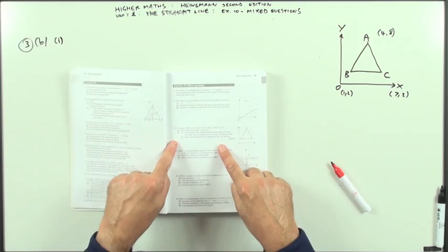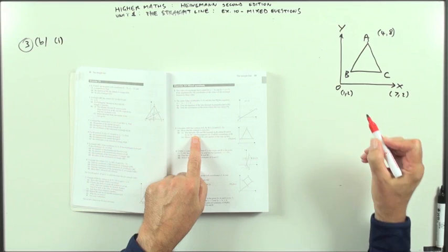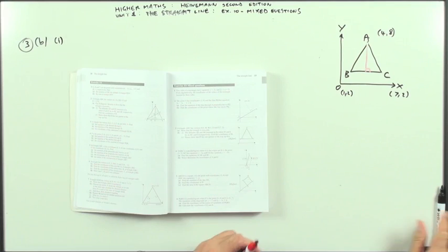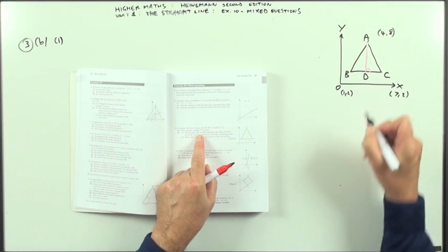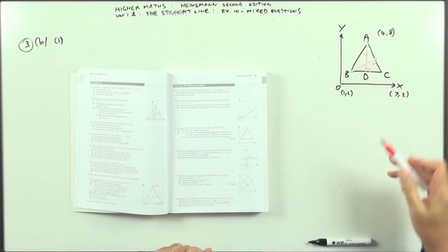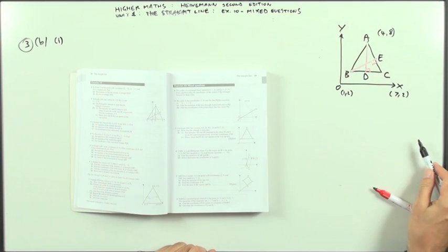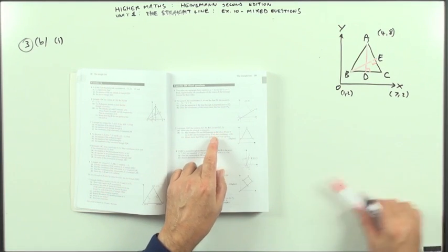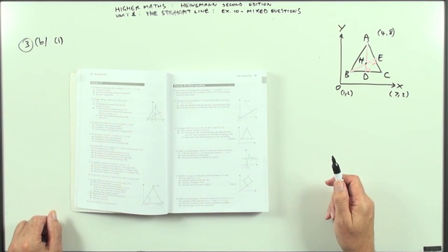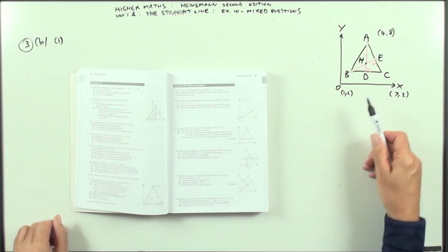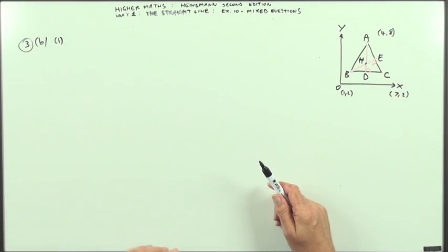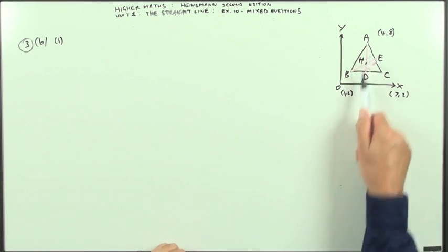So part B, first of all, the altitudes AD, so I'm going to draw it in the sketch. So altitude means it goes straight to the opposite side at right angles, and it gives a name for the foot of the altitude, so that's called D. And BE, again that altitude's got a name, so I'll call that E. Intersect at H, so the point of intersection's got a name. And what you've got to do, you've got to find the coordinates of H, which means finding the equations of AD and BE, and then getting the point of intersection. What we'll do, we'll do AD first of all.